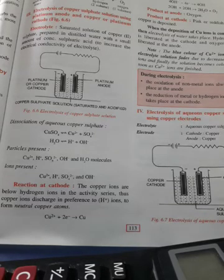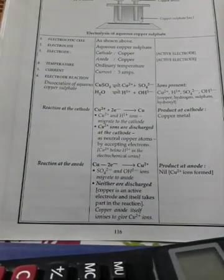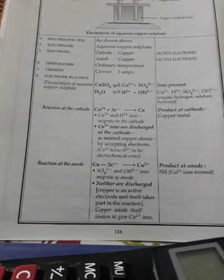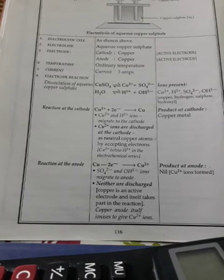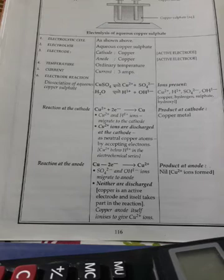Then we will discuss second condition, electrolysis of aqueous copper sulphate using active anode that is copper. Reaction at cathode will remain same. At cathode reaction will be same here. Same electrolyte, copper sulphate, dissociation of aqueous copper sulphate: copper ion, sulphate ion. Water will give hydrogen ion and hydroxyl ion.